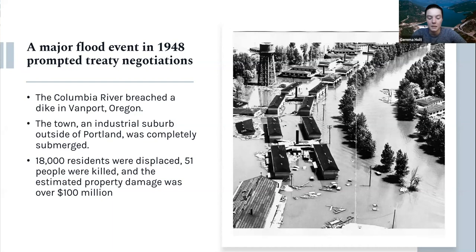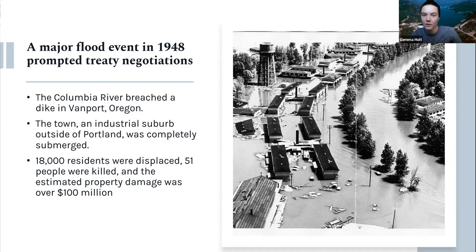The specific impetus for the Columbia River Treaty was a major flood in 1948. The river was abnormally high due to deep snowfall and large rainstorms, and it breached a dike in Vanport, Oregon — an industrial suburb outside of Portland. The town was completely submerged. 18,000 residents were displaced, 51 people were killed, and estimated property damage was over $100 million. The original treaty emerged in response to the trend of hydropower development and the specific flood control needs raised by the Vanport flood.